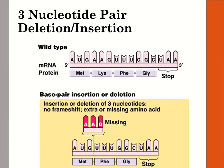There are also three-nucleotide pair deletions or insertions. Looking at the wild type on top, we have four amino acids and a stop codon. When there's a base pair insertion or deletion of three nucleotides, one amino acid — in this picture, lysine — is completely removed, leaving just three amino acids followed by the stop codon.